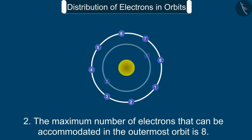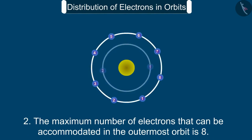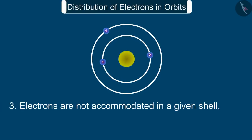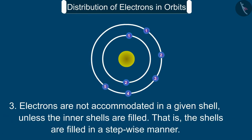2. The maximum number of electrons that can be accommodated in the outermost orbit is 8. 3. Electrons are not accommodated in a given shell unless the inner shells are filled, i.e., the shells are filled in a stepwise manner.